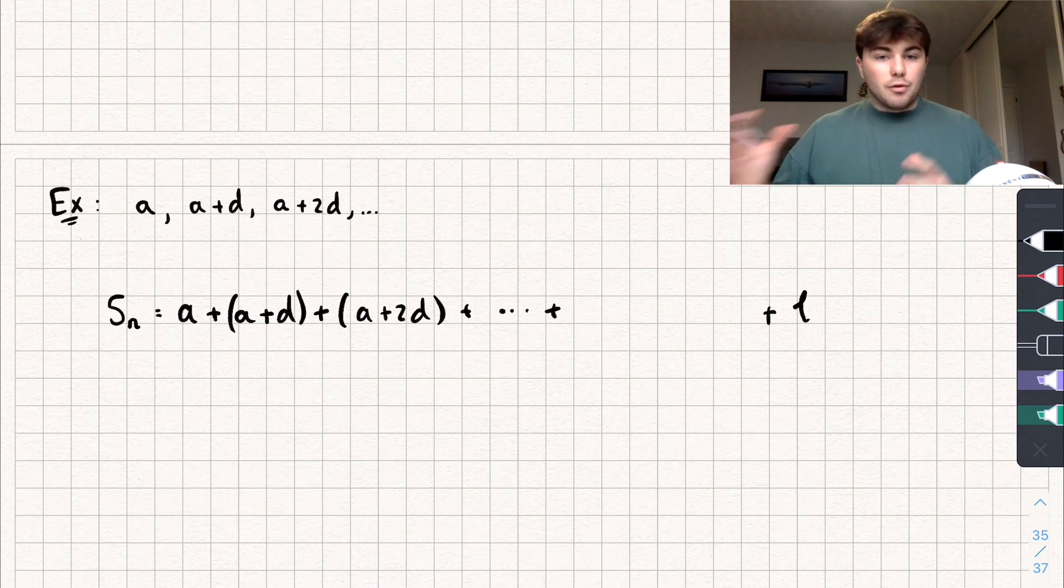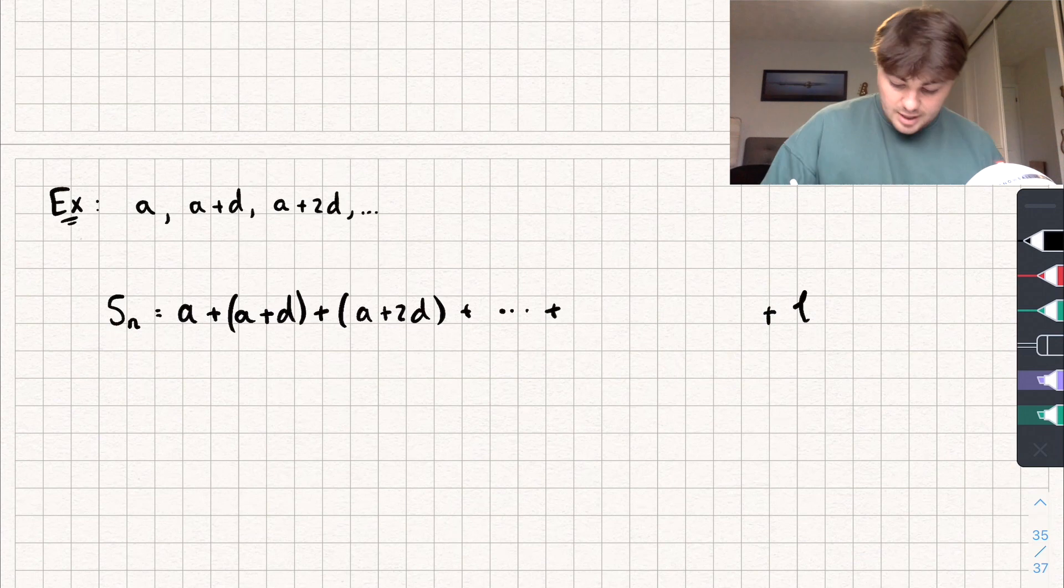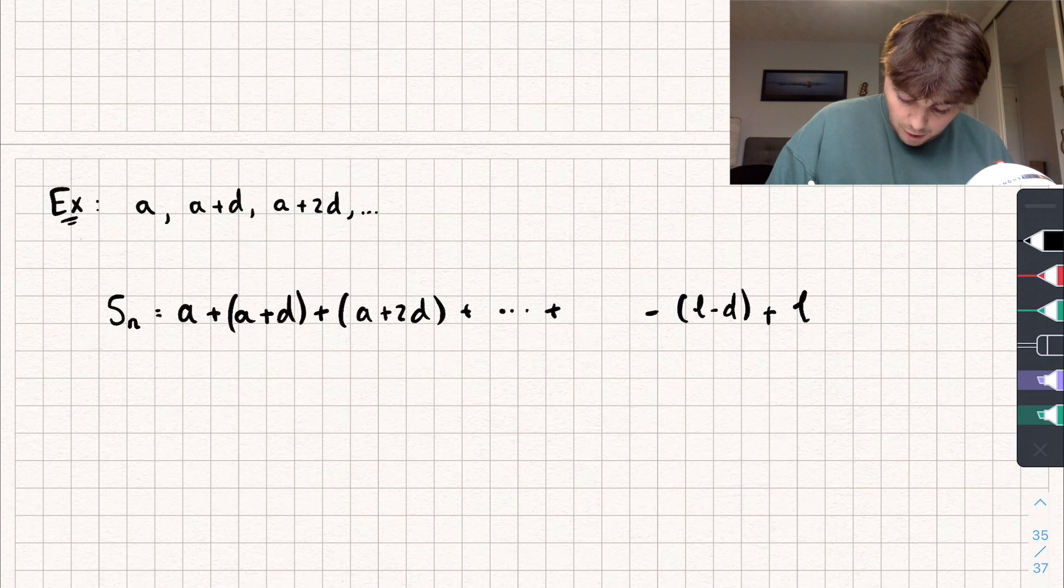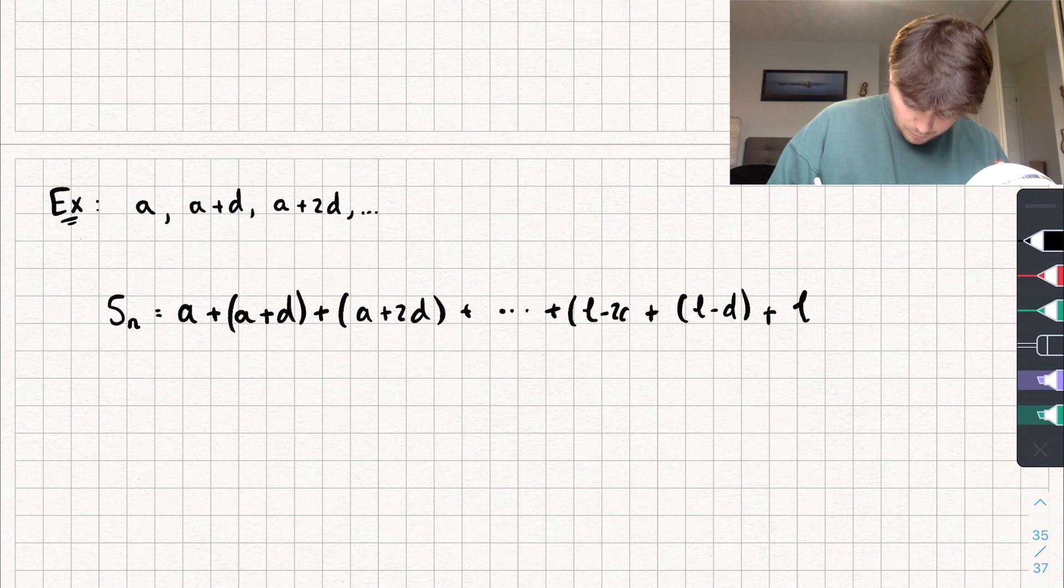So the number that's before the last term is going to be L subtract the common difference, which is D. So that's going to be L minus D. And the term before that is going to be L minus 2D.